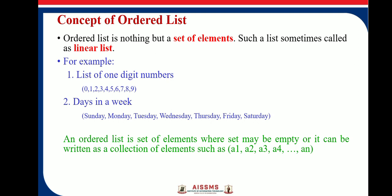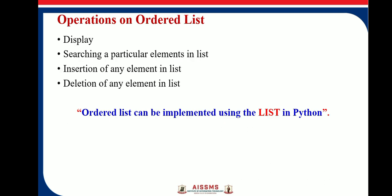Another example is the days in a week — Sunday, Monday, up to Saturday — which is a collection of elements. These are two examples of an ordered list. An ordered list is a set of elements where the set may be empty, or it can be written as a collection of elements such as a1, a2, up to an.